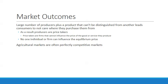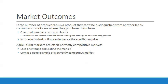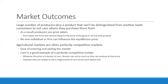Agricultural markets are often perfectly competitive markets. Corn is a good example — whatever the price of a bushel of corn, farmers can sell as much as they can produce at that price. However, they're unable to sell a single bushel at any price above that. If the price is $6 a bushel, they can't sell at $6.01 because everyone else is selling at $6, so they simply accept the market price.